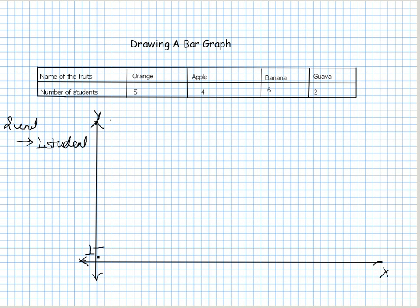So I am placing here one, two, three, four, five, six, and so on. The scale should be chosen so it can represent the minimum and maximum data on the axis. We have to select this scale carefully. Here we are representing the number of students.